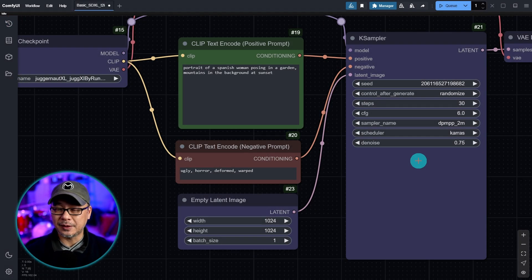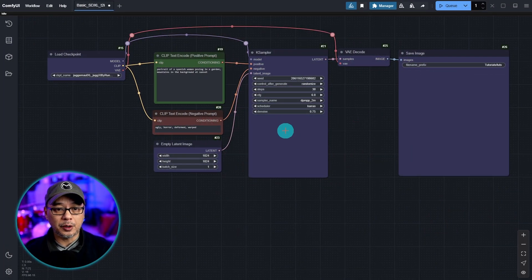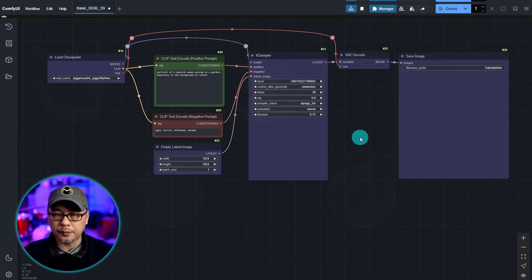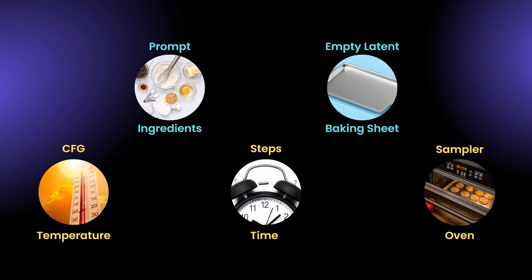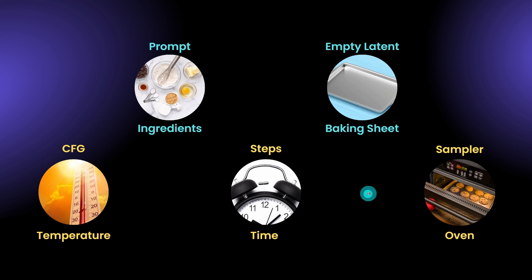If you've been following along, you know this is our basic workflow. I'm going to quickly review the process with you using a baking analogy so things make sense. Creating images is like baking cookies. You have your prompt, which represents the ingredients. The empty latent is sort of like the baking sheet — once you have all the ingredients together you need to put it somewhere to cook, and that's what the empty latent is. Now when it comes to the KSampler, there are three parts to it.